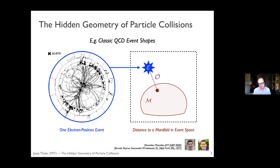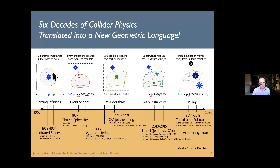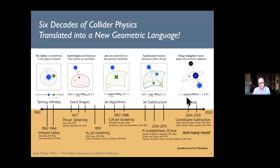The punchline of this whole story is that we can translate six decades of collider physics into a new geometric language. This geometry that comes from the artificial intelligence community and the data science community turns out to be one we've been living with for quite a while in jet physics and QCD. Notions like infrared and collinear safety, event shapes, jet algorithms, jet substructure, and even techniques like pileup mitigation turn out to be easier to understand through this geometric language — and that's what I'm going to explain in this talk.